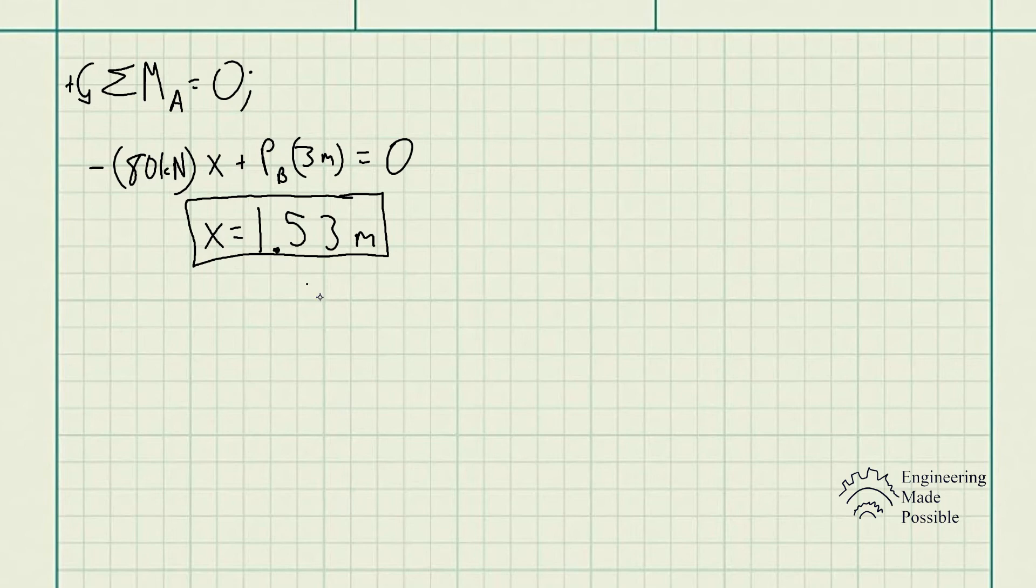So it could be a little bit counterintuitive at times. But remember, just use the fundamental principles and you should and you will be getting the correct answer. So now we solved for the X on the location where that 80 kN should be located.